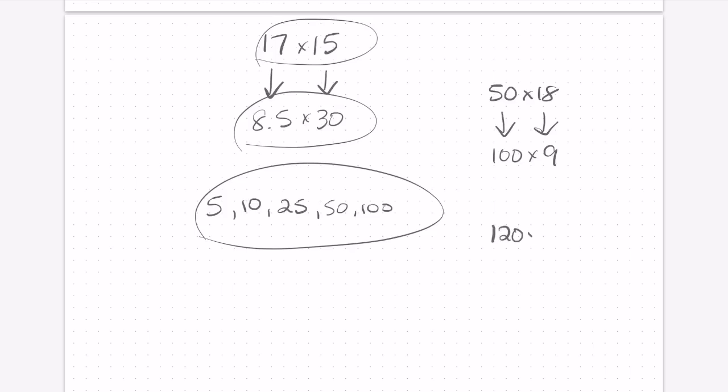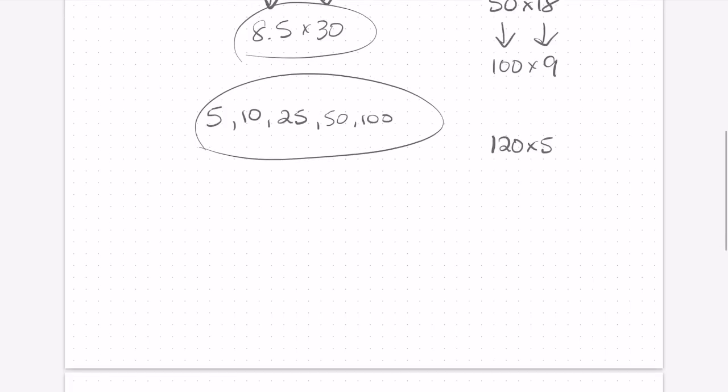120 times 5 would lend itself well to the halving and doubling strategy because we know that we can double that 5. As soon as we see a 5, we think we can double it to make 10, half the 120 to make 60, and now we have 60 times 10.